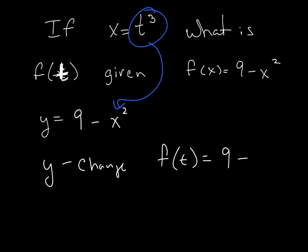I did it again, I was on the wrong side. Sorry. So that would be f of t equals 9 minus t to the third squared, or just 9 minus t to the sixth power.